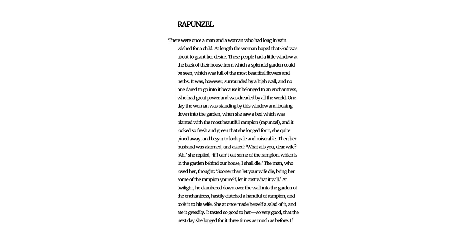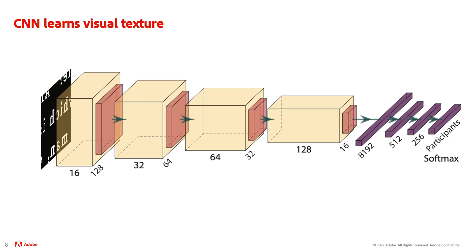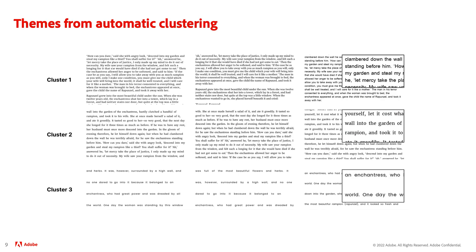To distill a large number of themes down to a handful of presets that are easy to choose from, we leveraged a CNN capable of describing visual texture. We trained a CNN that relates patches of user-formatted text documents to the user who designed them, and then extracted and clustered the feature vectors. These feature vectors allowed us to group similar crowdsourced reading formats together and identify cluster representatives as reading themes.